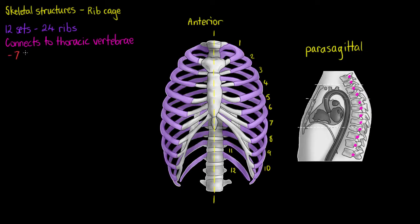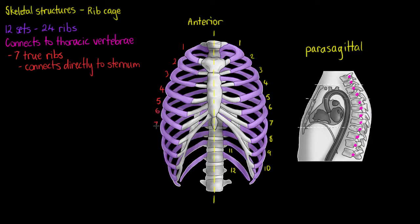Seven of these sets of ribs are what we classify as true ribs. The key feature that distinguishes our true ribs is that they connect directly to the sternum via their costal cartilage. We can see that at the front, at the anterior, they all connect to the costal cartilage that goes straight to our sternum.